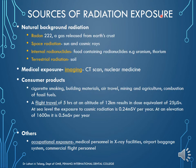There are various sources of radiation exposure. The most important is natural or background radiation, which includes radon gas released from the earth's crust, space radiation from the sun and cosmic rays, internal radionuclides found in food substances such as uranium and thorium, and terrestrial radiation from the soil.